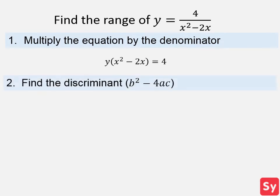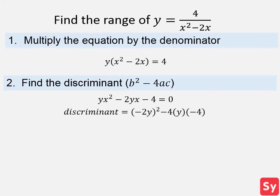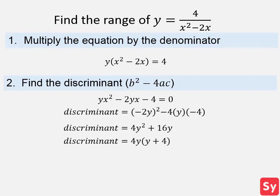Next, we want to find the discriminant, which is b squared minus 4ac. We will distribute and subtract 4 from each side to write the function in standard quadratic form. We plug in the values for a, b, and c, and next we simplify this. Lastly, we can pull out a 4y.